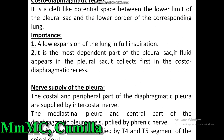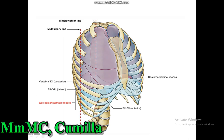The costo-diaphragmatic recess is another important written exam question. It is a cliff-like potential space between the lower limit of the pleural sac and the lower border of the corresponding lung. Its importance is that it allows expansion of the lung in full inspiration. It is the most dependent part of the pleural sac, so if fluid appears in the pleural sac, it collects first in the costo-diaphragmatic recess. This is the diagram of the costo-diaphragmatic recess.